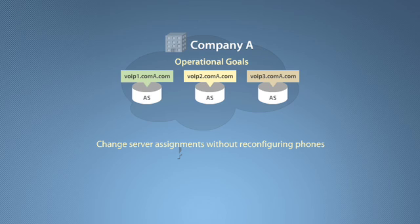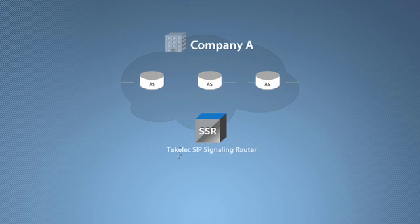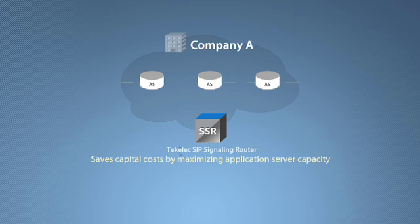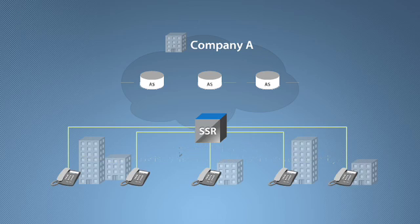This is where TechElect's SSR comes in. It's designed to help companies like Company A create a more flexible network free of endpoint constraints and save capital costs by simplifying subscriber management while making the most of application server capacity. The SSR shields the endpoints from changes to the network through network abstraction.